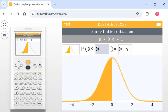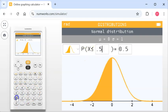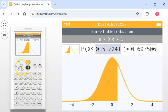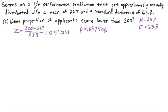We select lower than — this is where we put in our Z-score and it gives us our proportion. We put in 0.517241 and press Execute. It gives us our proportion right here: 0.697506. So P equals 0.697506. That means 0.697506 of applicants score lower than 300. You could round to 0.6975, but homework systems may want more decimal places.